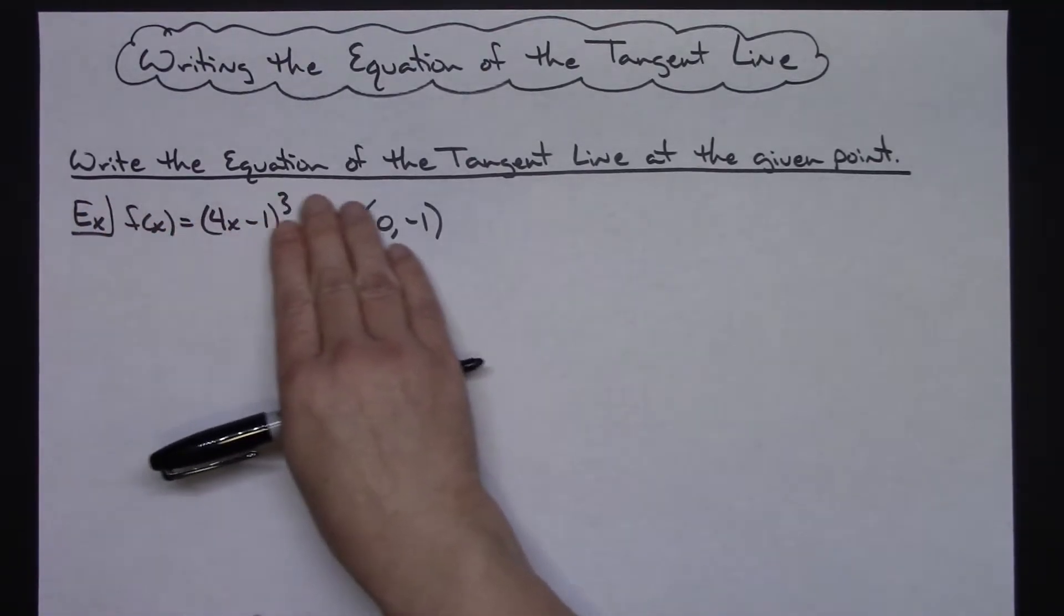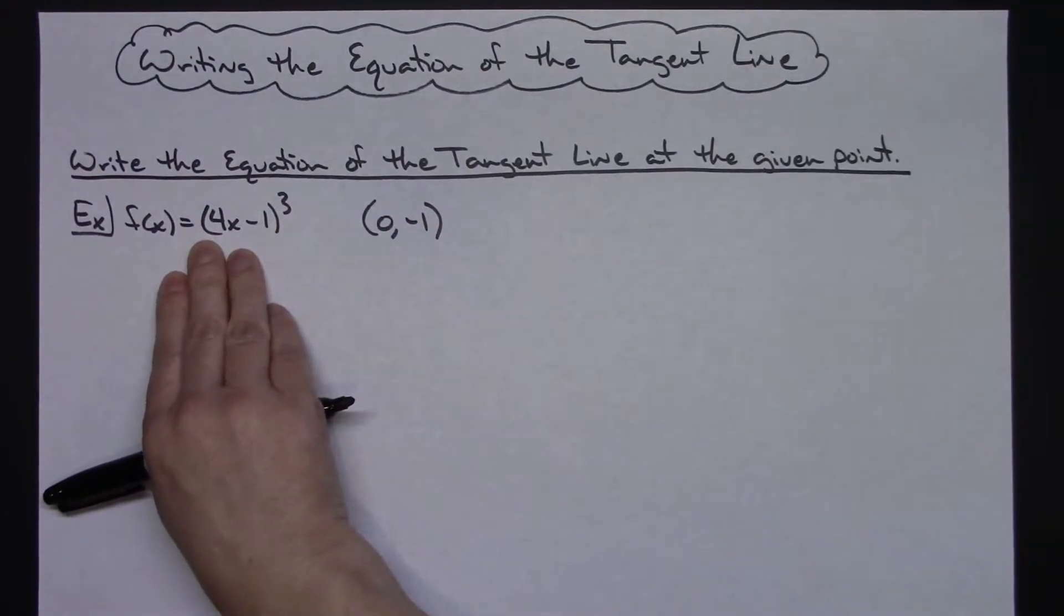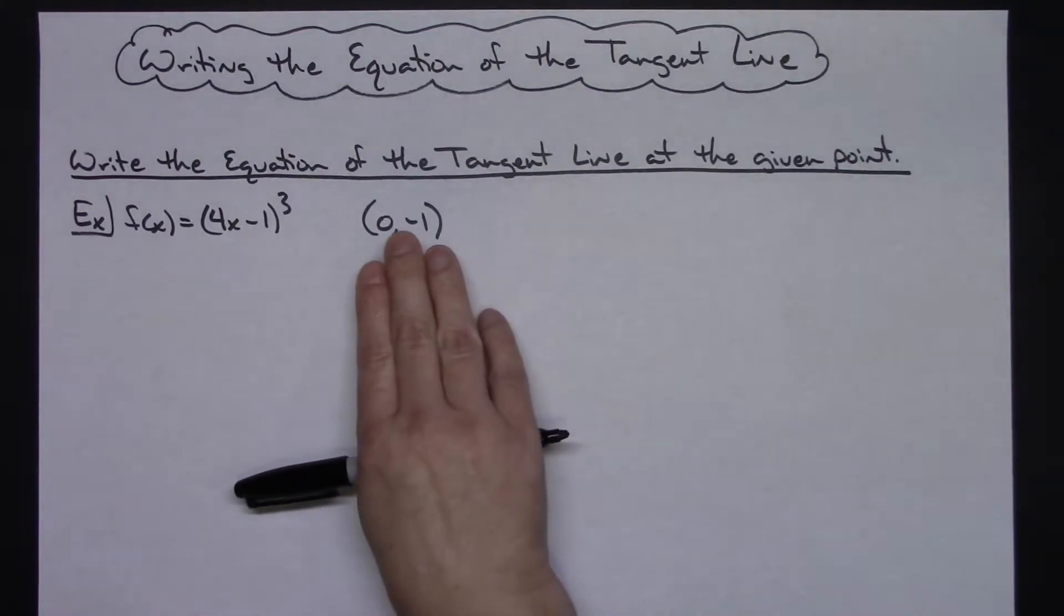So my directions are going to say write the equation of the tangent line at the given point. They give me a function f(x) = (4x - 1)³ and then through the given point (0, -1).